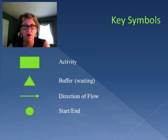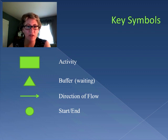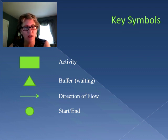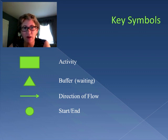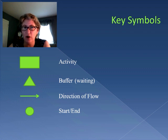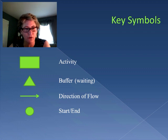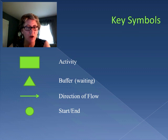The first things you need to understand are the key symbols of a process flow diagram. Activities are always represented by rectangles. Waiting areas, known as buffers, are always represented by triangles. Arrows show the direction of flow from input to output. Sometimes you see circles or ovals representing starting and ending points. It's very important that you use the correct symbol for the correct activity or buffer, so that anybody looking at your diagram knows what's happening.